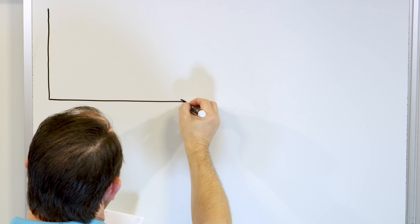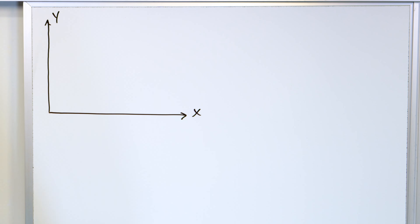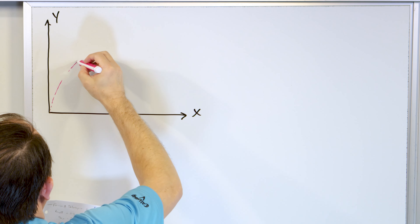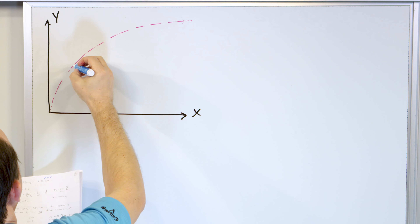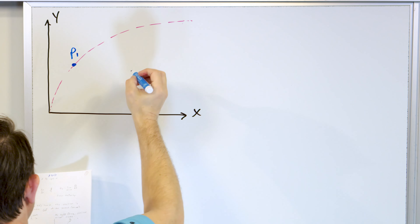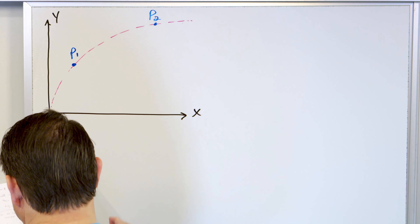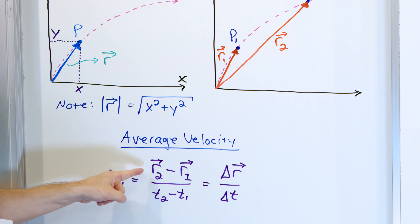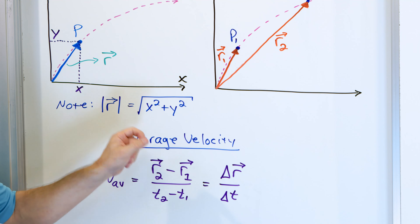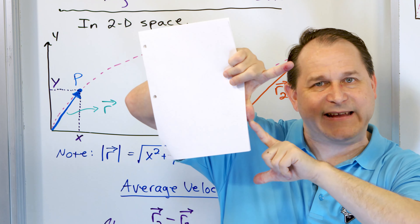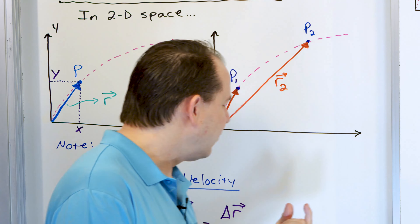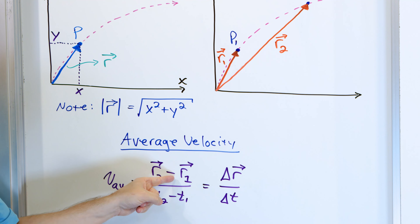I'm going to draw another little axis — this is x, this is y. Here in the beginning we have position P1, and over here we have P2. What we want to do to find the average velocity is to take position vector two minus position vector one. We already learned how to add vectors graphically and how to subtract them. If you add vectors graphically, you put the vectors head to tail and then draw an arrow from start to finish. But we're not adding these vectors — we're subtracting them: R2 minus R1.